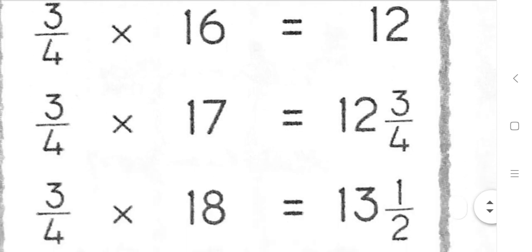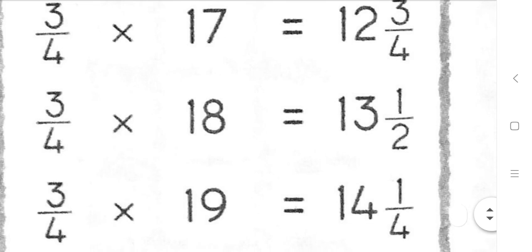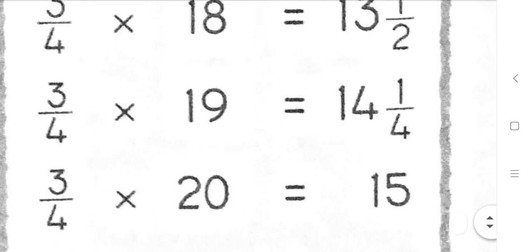3 quarters 18s are 13 and a half. 3 quarters 19s are 14 and a quarter. 3 quarters 20s are 15.